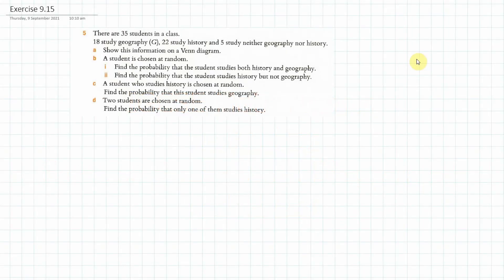Welcome IGCSE students. Today we're looking at exercise 9.15, Venn Diagrams and Probability. So let's quickly work our way through this one. I'm just doing one example. This is one of the ones that you have. Of course, if you get stuck on any of the others, let me know.